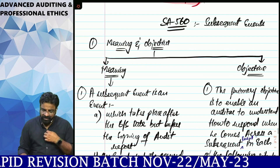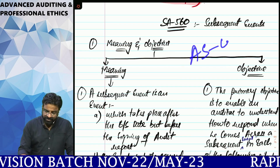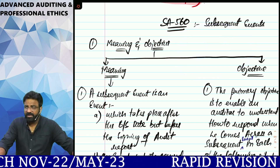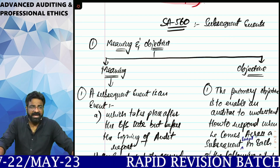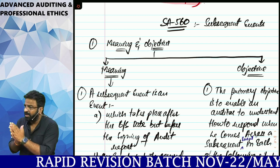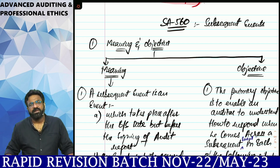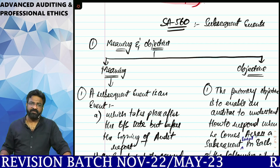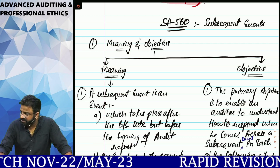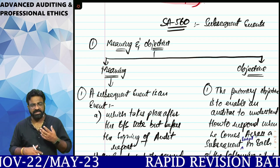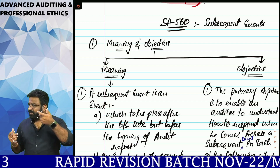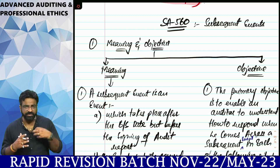This is a very easy standard. If you are aware of AS4, which you studied at the intermediate level in advanced accounting, then this standard will be easy for you. However, AS4 was limited — it only covered events after the balance sheet date and before the approval of financial statements by the board of directors. Here, we use the term 'subsequent event,' which refers to an event occurring after the balance sheet date but before signing the audit report. In accounting, we say 'before approval'; in auditing, we say 'before signing the audit report.'